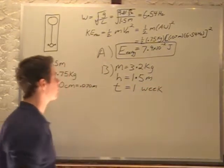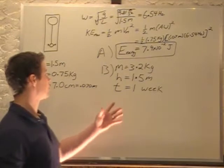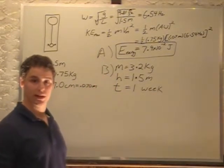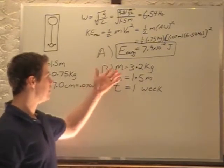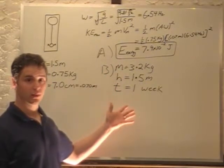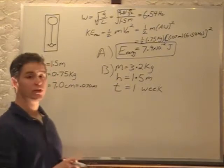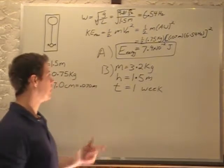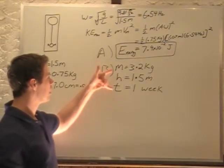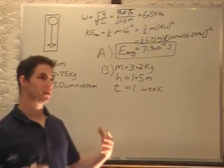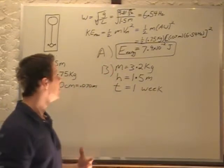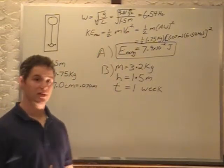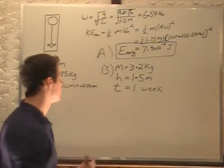So in order to figure this out, right now we have mass dropping a height, which is just basically potential energy. That will tell us the energy dissipated in one week. But we're asked for the energy dissipated in one cycle. So if we can figure out the energy dissipated in one week, convert that to the energy dissipated per second, and then figure out how much energy dissipated per cycle.